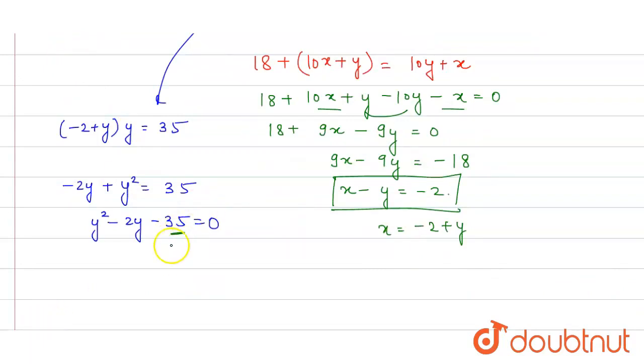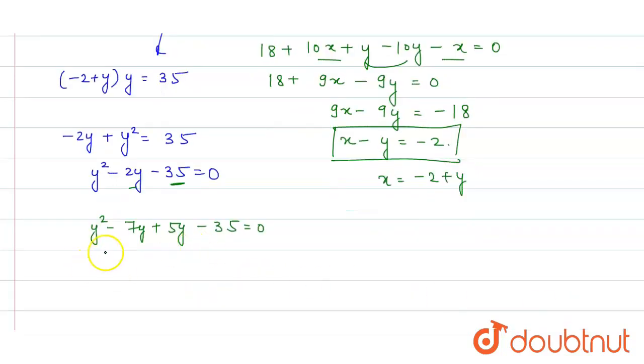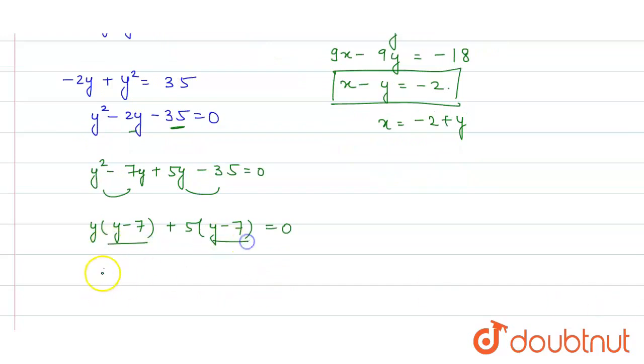Now we will factor 35, so 7 into 5. So y squared minus 7y plus 5y minus 35. We will use middle term splitting. Taking y common in these two, y minus 7. Taking 5 common in these two, y minus 7. This is equal to 0, y minus 7 times y plus 5 equal to 0.